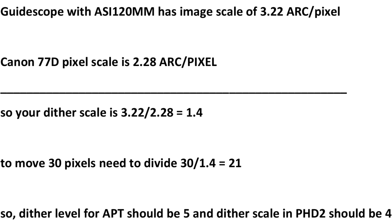Same thing with the Canon 77D pixel scale — pixel pitch is 3.79 divided by the focal length of 3.36, and you come out to 2.28 arc seconds per pixel with the Canon 77D and the 71GT. So to figure your dither scale, you take those two numbers — the guide camera divided by the imaging camera — and this gives you a factor of 1.4. A good aggressive dither recommended is about 30 pixels, and in order to get that, you take that factor and divide it by 30, which gives you 21.